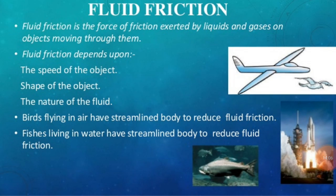Now we are going to study about fluid friction. First, we need to know what a fluid is. Those substances which are able to move or flow easily are commonly known as fluids. Fluids do not have a fixed shape. Liquids and gases are examples of fluids because they can flow easily. The most common liquid around us is water — so water is a fluid. The most common gas mixture around us is air — so air is also a fluid. Water and air are the most common examples of fluids.